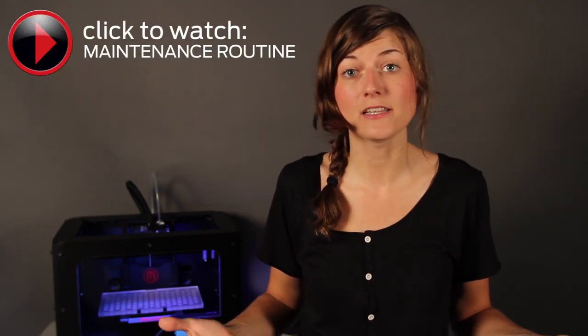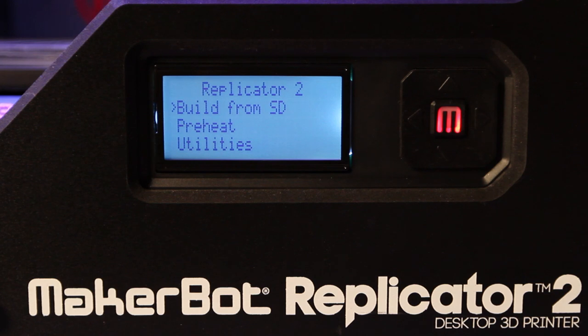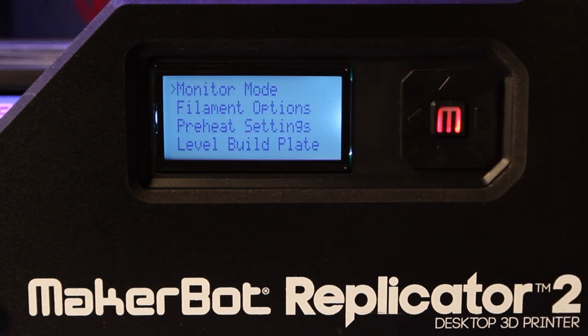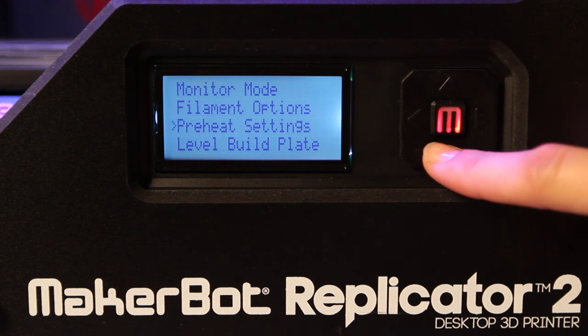If you're having trouble, or if you just need to level your platform again, you can always repeat the leveling process by going to Utilities in the main menu and selecting the Level Build Plate option.